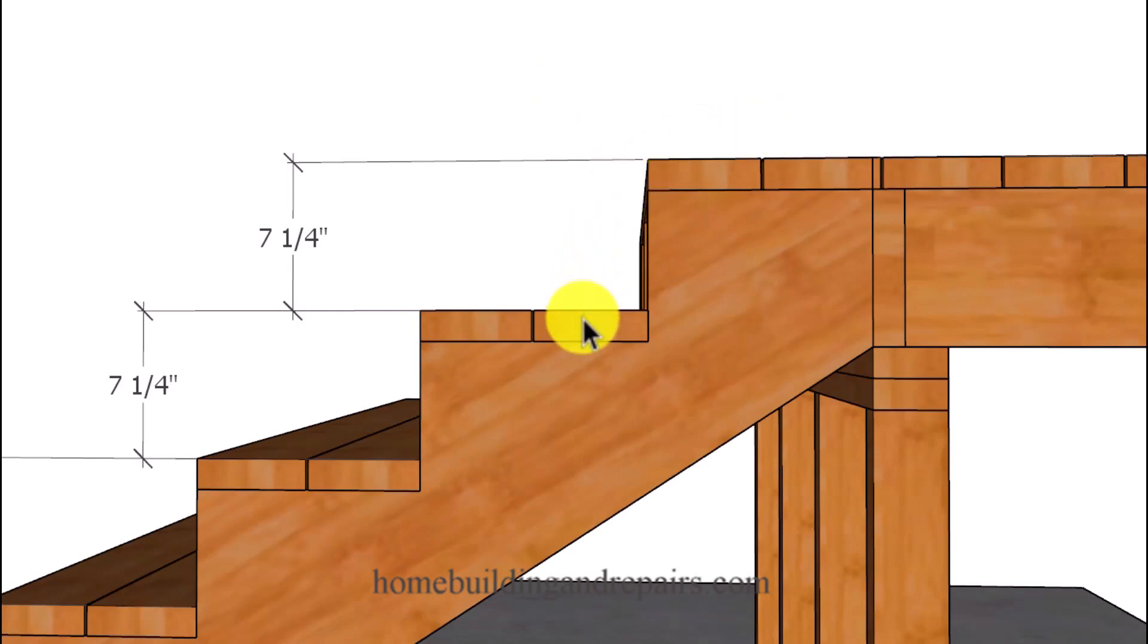So for example, if I have two inch thick stair treads and one and a half inch thick decking on the top, I'm going to need to adjust the top measurement of the stair stringer to compensate for the difference.